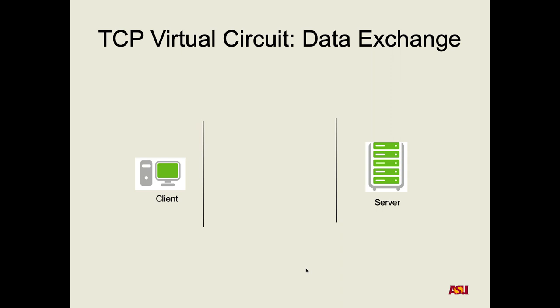Now that we've established communication, how does each side know what data has been sent and that the other side has seen it? Acknowledgements. Every packet one side sends has a sequence number, and the other side will always send an acknowledgement back saying it saw up to that sequence number plus whatever data it saw. That way both sides can track what the other side has seen.